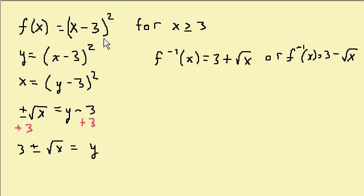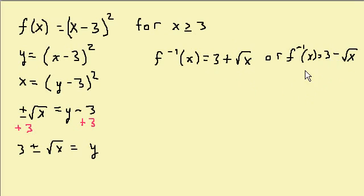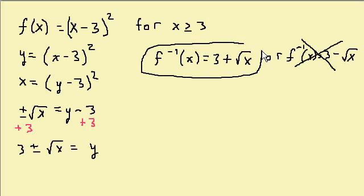Now, the domain of the function is x ≥ 3, so which solution gives values greater than or equal to 3? Plugging 0 in for x: 3 plus 0 equals 3. Plugging 1 in: 3 plus 1 equals 4. So y equals 3 plus the square root of x gives values ≥ 3. The other solution, y equals 3 minus the square root of x, gives values less than 3 — for example, plugging in 1 gives 3 minus 1 equals 2, which is not ≥ 3. So the answer is f inverse x equals 3 plus the square root of x. And that's all for this video.